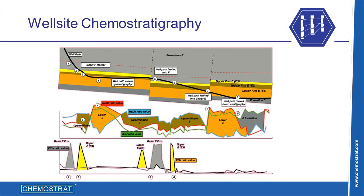Chemostrat was also responsible for the establishment of the first well-site chemostratigraphy service, and we now offer a unique lab-based pilot and optimised chemostratigraphy and mineralogy service at well-site. In addition, clients can benefit from our non-exclusive chemostratigraphic database of over 300 wells, which can be used for offset well correlation for new well-site deployments.